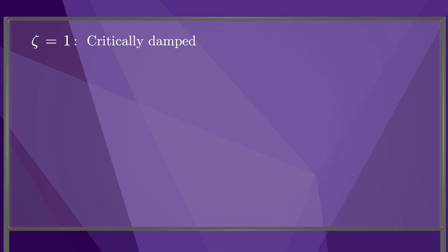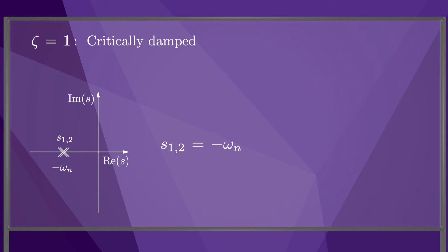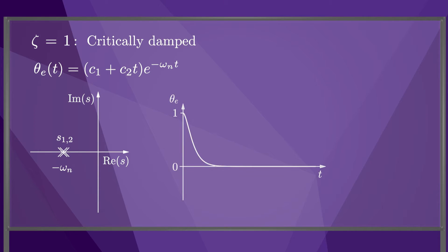If the error dynamics are critically damped, then the roots are identical at minus omega n, and the error response takes this form, where the time constant of the decaying exponential is 1 over omega n. Solving for c1 and c2, the unit step error response looks like this. Again, there is no overshoot or oscillation. Unlike the overdamped response, neither of the roots is slower than the other. As with the first order response, the 2% settling time is approximately 4 times the time constant of the exponential.